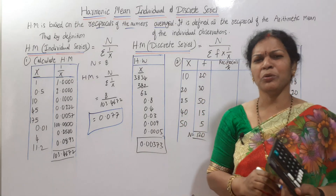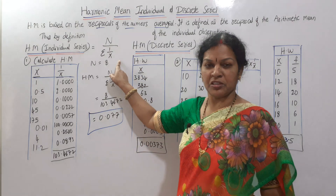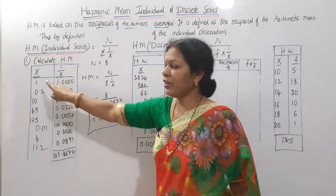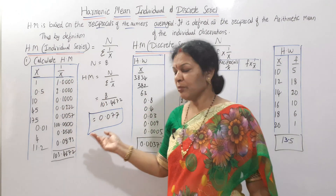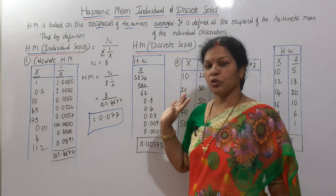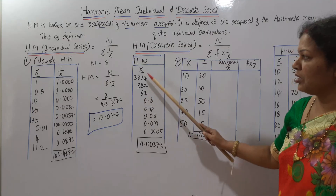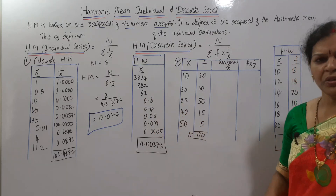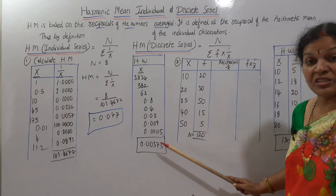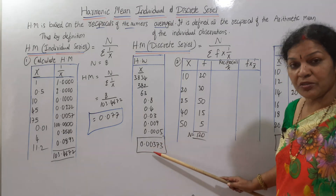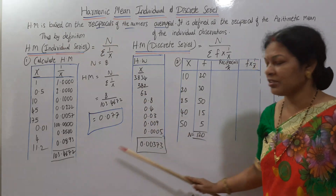Is the calculation clear? The formula is n by sigma (1 by x), where n is the number of observations. We divide 1 by each item: 1 divided by 1, 1 divided by 0.5, and so on, and find the total. Then the formula gives 8 divided by that total. The final answer is 0.0373.